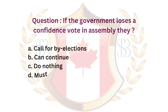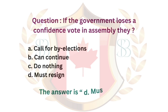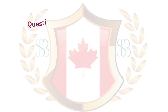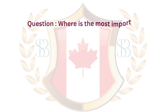Question. If the government loses a confidence vote in assembly, they: a. Call for by-elections. b. Can continue. c. Do nothing. d. Must resign. The answer is d. Must resign.